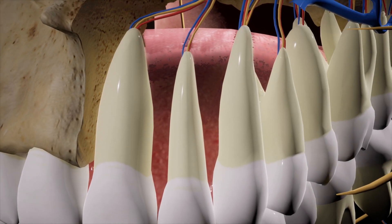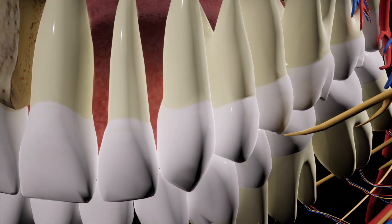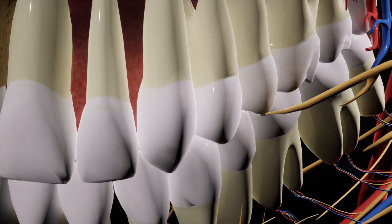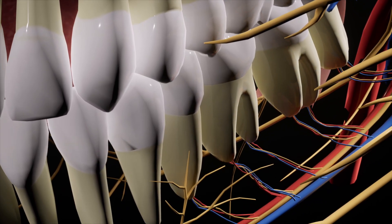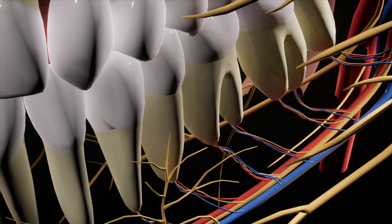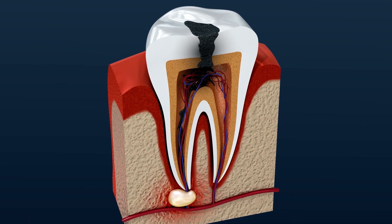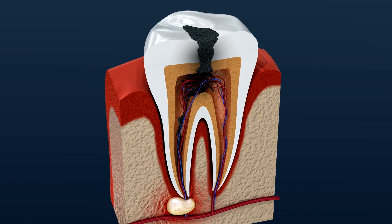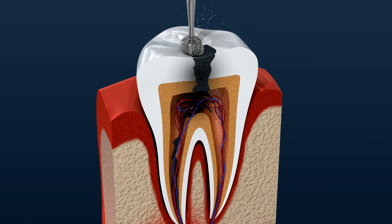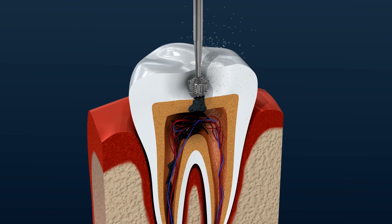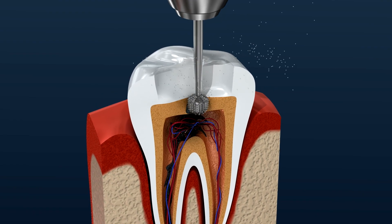How is dental caries treated? The approach depends on the severity of the decay. In the early stages, fluoride treatments can help remineralize the enamel and reverse the damage. Fluoride can be applied as a varnish, gel, or foam by your dentist, or you can use fluoride toothpaste and mouthwash at home.